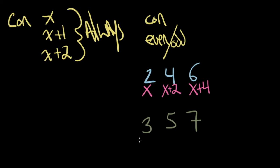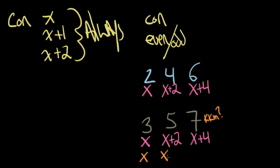Do you know what the KKM — the common kid mistake — is? For consecutive odd, kids want to write x, x+1, and x+3. They want to use odd numbers because it's consecutive odd. But no. Consecutive even and consecutive odd have the exact same algebra: x, x+2, and x+4. Don't make that mistake.